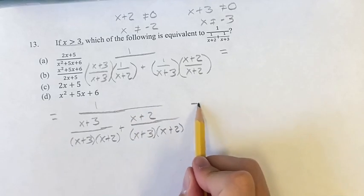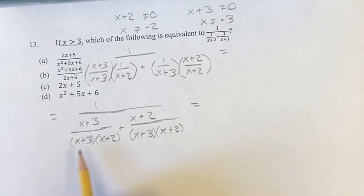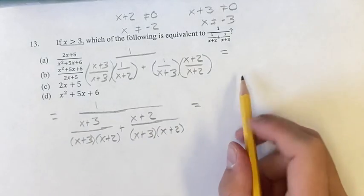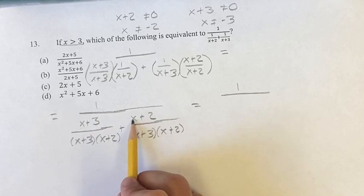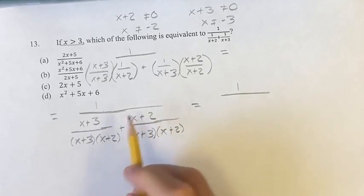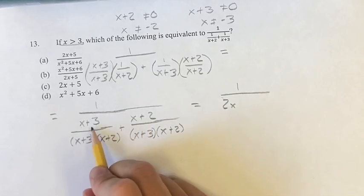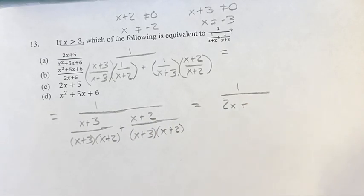So now you can see why we did that, because now we have two fractions with the same denominator, therefore we can add their numerators. So we have 1 divided by x plus 3 plus x plus 2. So we have x plus x is 2x, plus 3 plus 2 is 5.